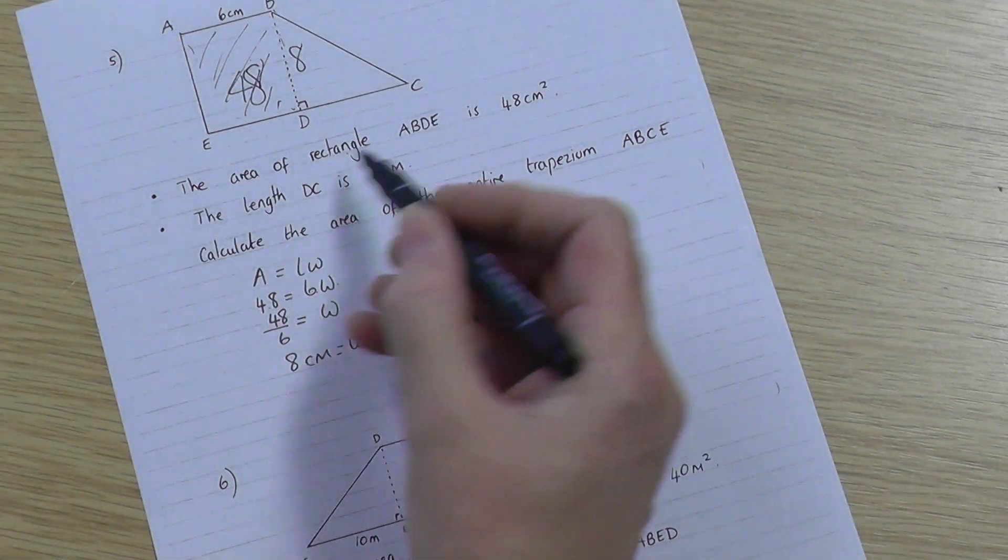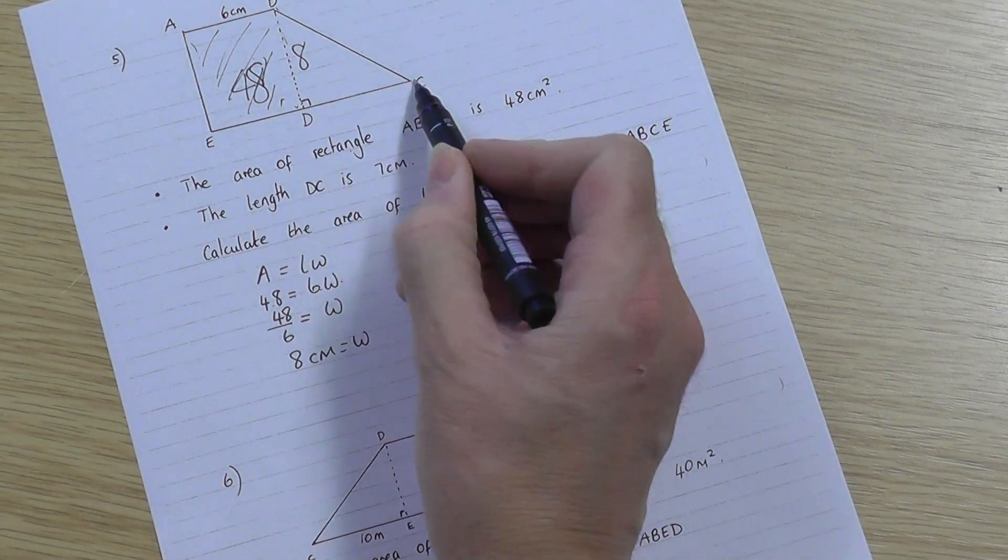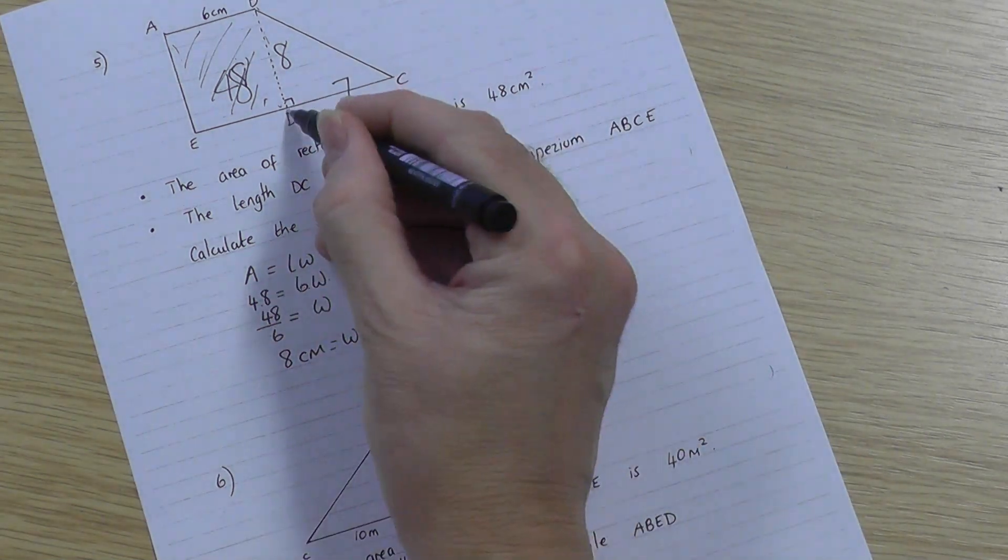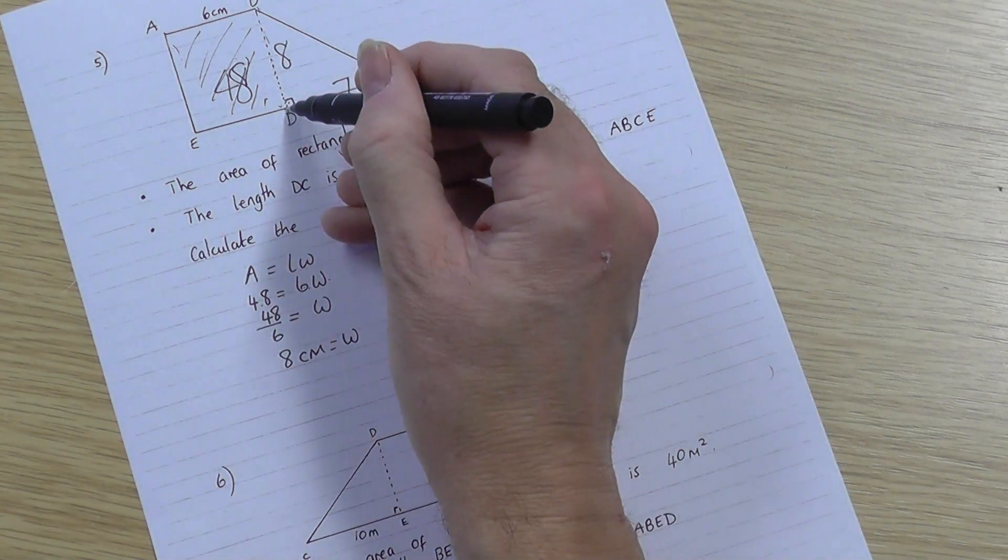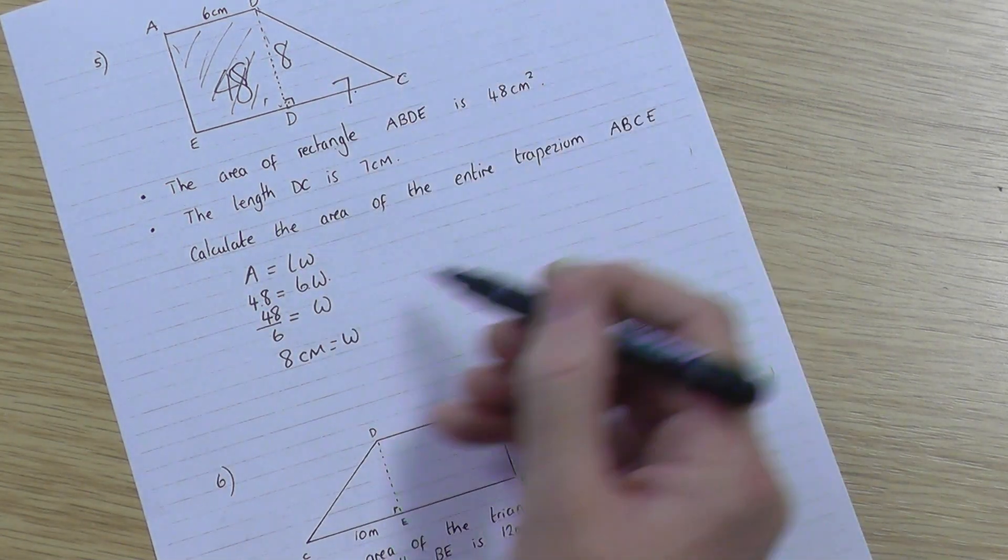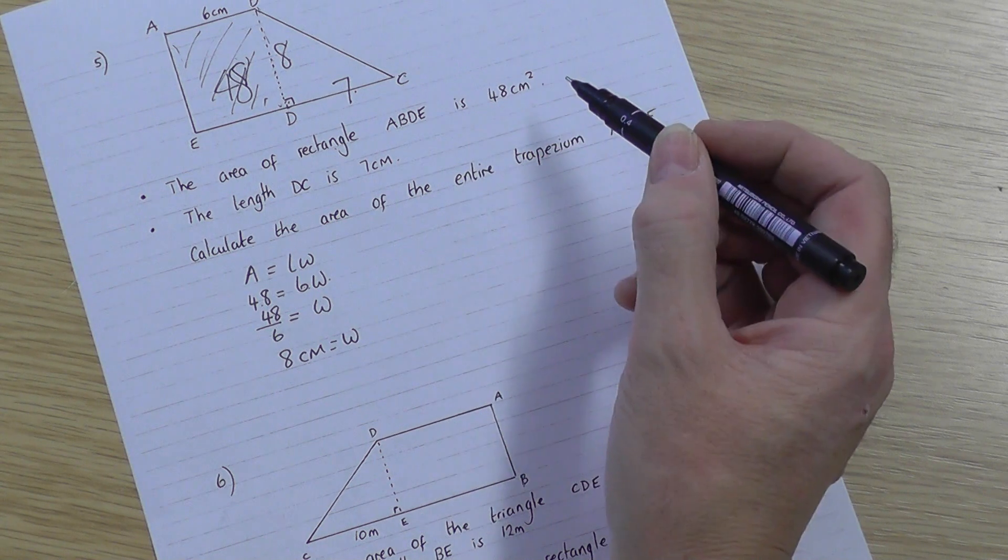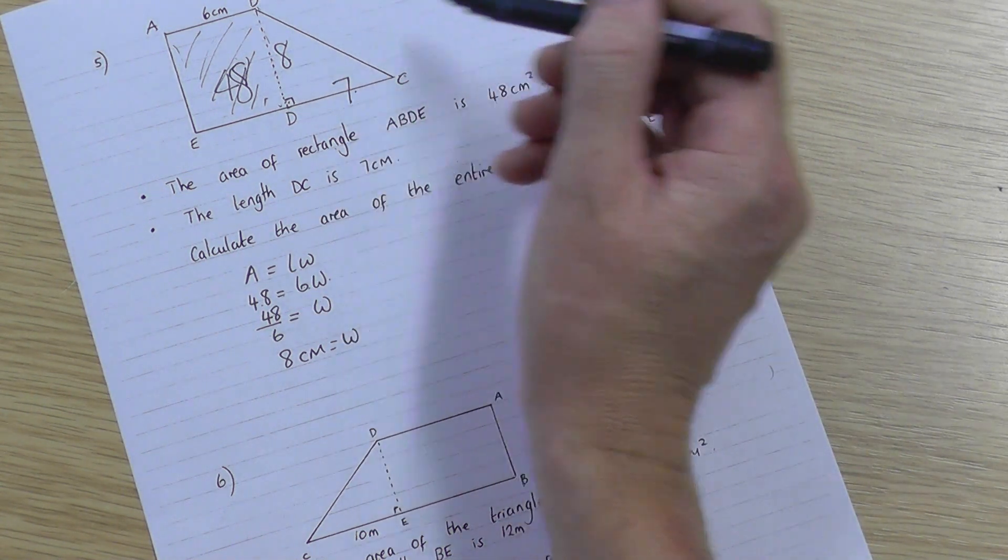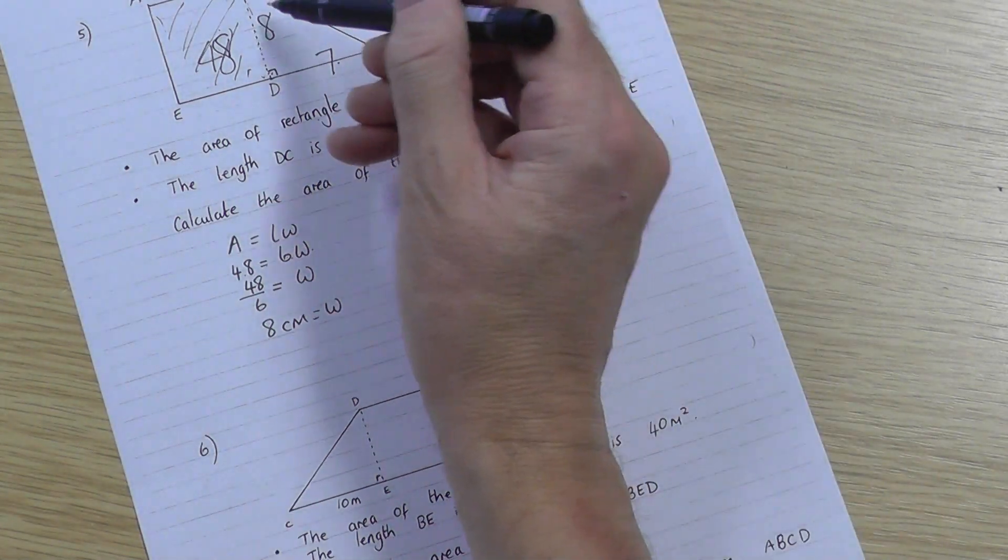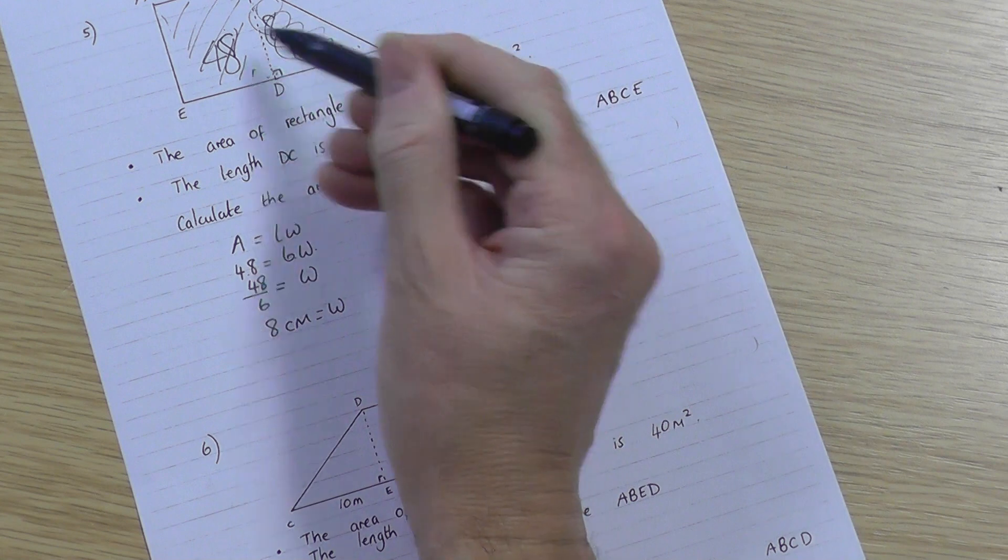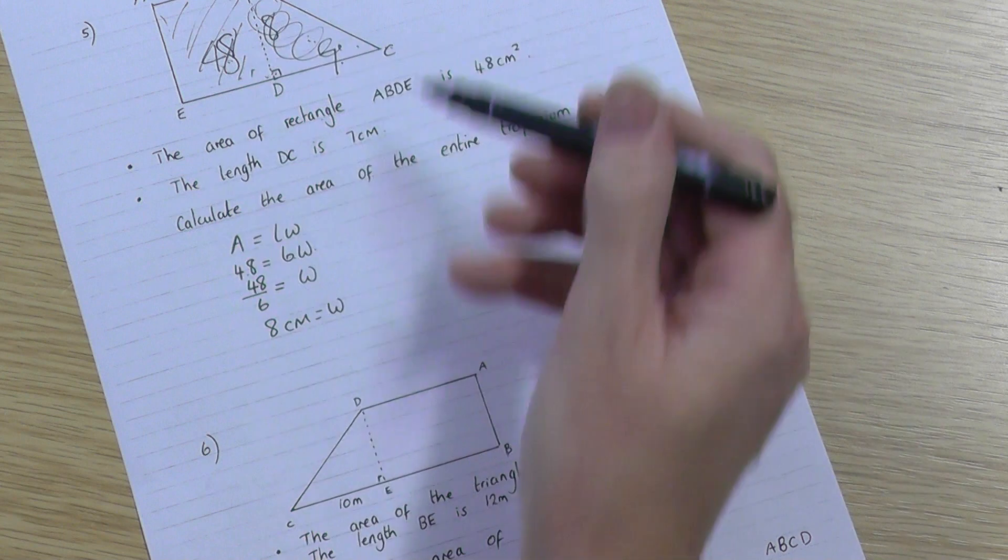So what does it mean now? Well, let's think about this. The length DC, it says, is 7. D to C, that's 7. So I'm D to C. I now know the dotted line is 8 from the first bit, from this calculation, and I know that is 7. Calculate the area of the entire trapezium. Right, OK. Well, all I've got to do is, if you think about it, probably the easiest way, instead of using a trapezium formula, which I could do, is probably just work out the area of this triangle now, and add it to the 48, because the 48 was the rectangle. And if I add the two areas together, I've got the total area.